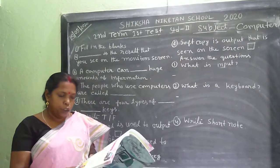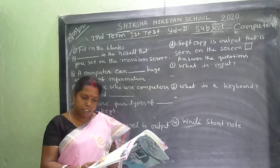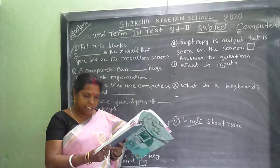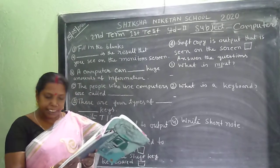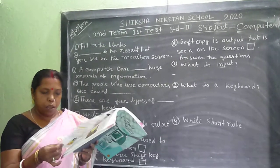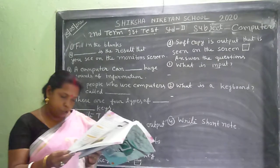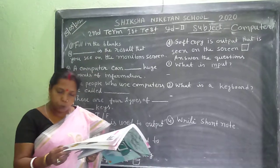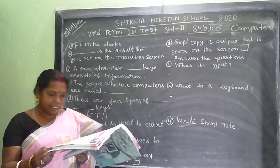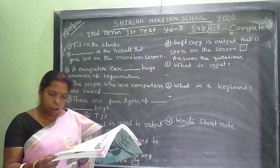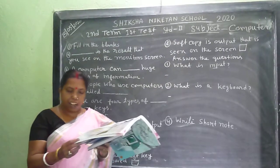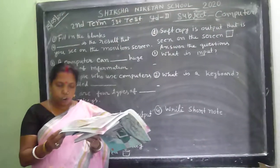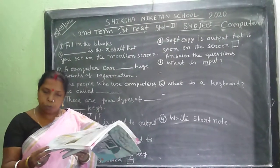Do you know that the computer also works in a similar fashion? Like the ingredients that were put into the mixer to prepare the fruit juice, there are various things that can be entered into the computer, such as letters, numbers, symbols, etc. These things are called data. The computer collects, organizes, and converts the data into useful information.